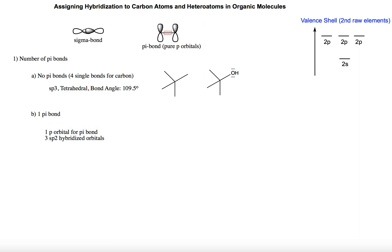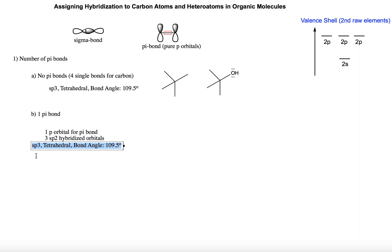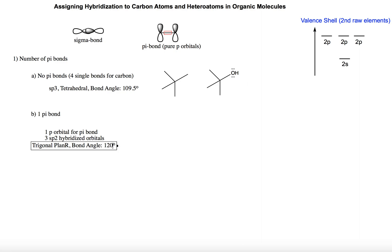What is the geometry expected for an SP2 hybridized atom? The geometry for an SP2 hybridized atom is trigonal planar, meaning the molecule is flat, and the expected bond angle is 120 degrees.